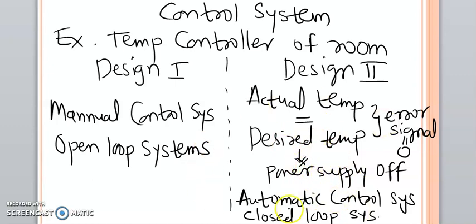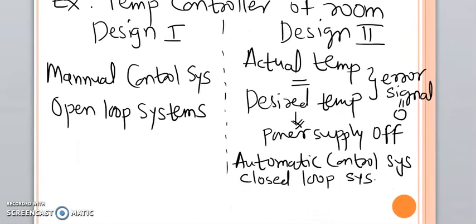Such systems are also called closed loop systems, because feedback is taken from output to input — there is a mathematical relation between output and input. The error signal, which is the difference between actual and desired temperature, is minimized, or in the ideal case made equal to zero, so the power supply is automatically turned off. Design 2 is clearly the better design. The servo motor works on this same principle of the closed loop control system, where feedback is taken from output to input and the error is calculated and minimized.